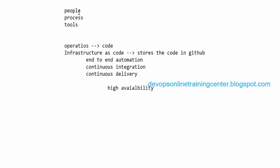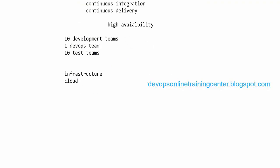In terms of process, DevOps is responsible for the entire infrastructure. They define how people should maintain the code. Let's say there are 10 development teams and one DevOps team, with 10 test teams as well. DevOps manages all the resources and infrastructure, which can be on-premise or on the cloud. With 10 development teams, there are 10 applications to build.